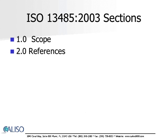Section 2.0 is the reference section. It references ISO 9000-2005, quality management systems, fundamentals, and vocabulary. Please note that the ISO 1345 standard has not been revised since 2003. Therefore, the reference included in this section of the standard still reflects ISO 9000-2000, quality management systems, fundamentals, and vocabularies. Our classes online have specifically been updated to the 2005 standard.